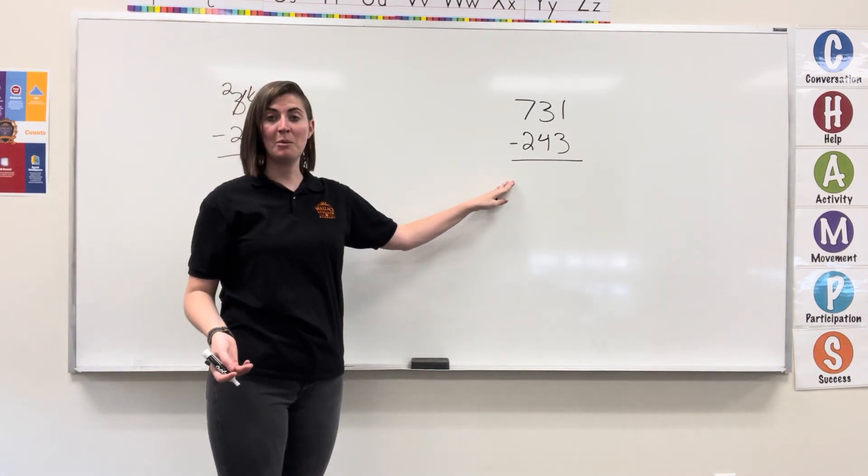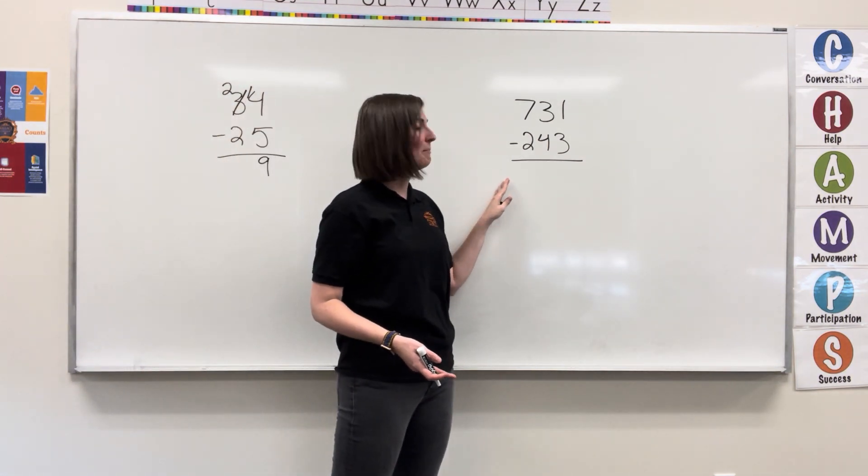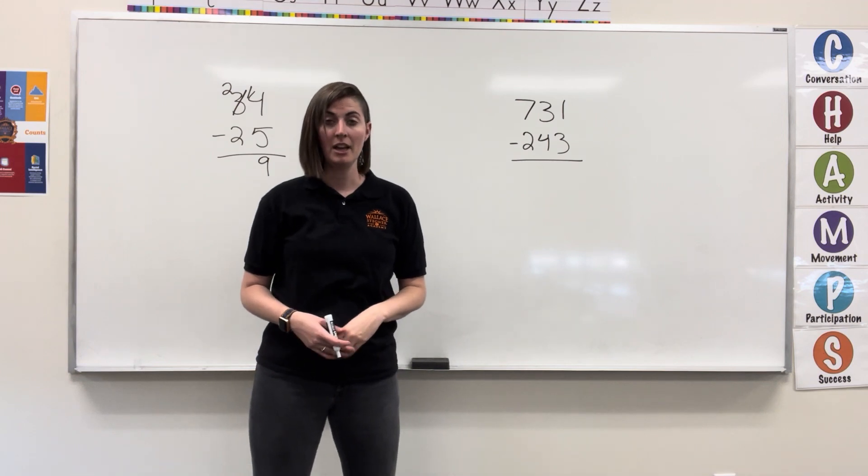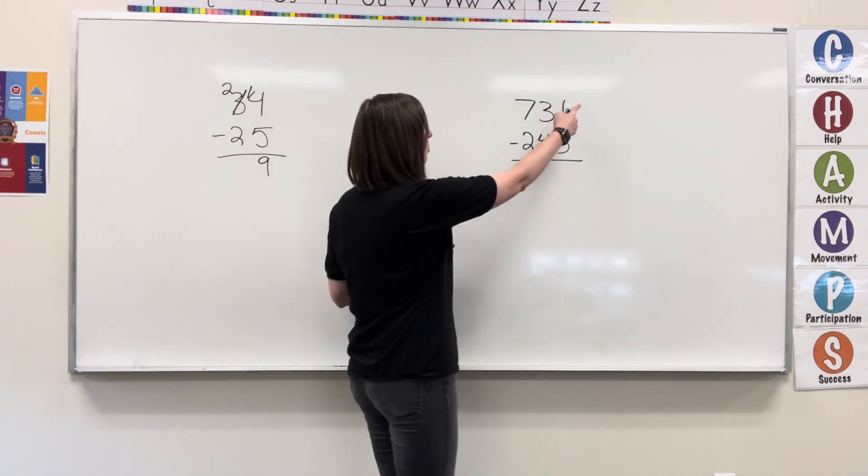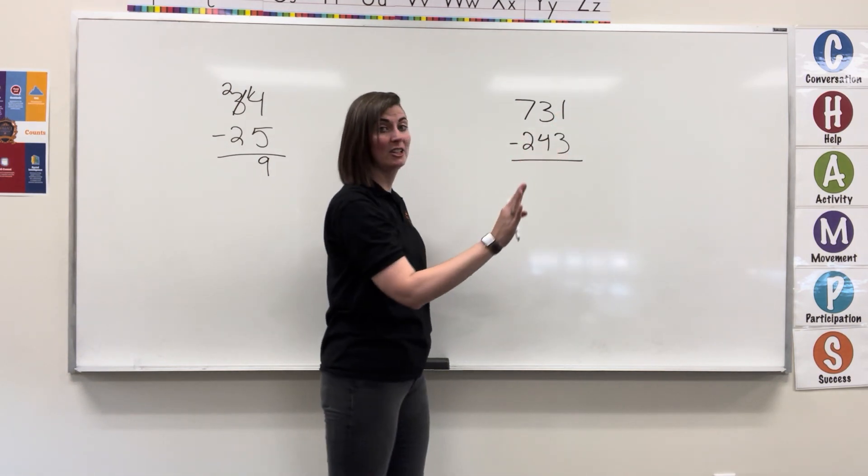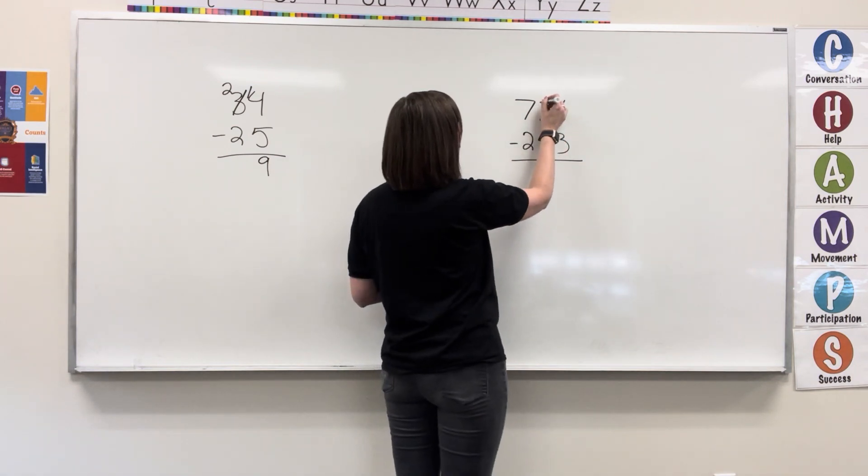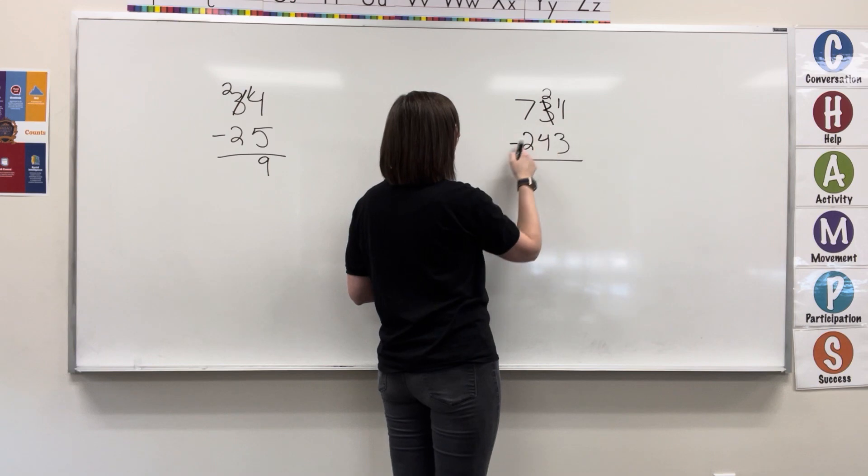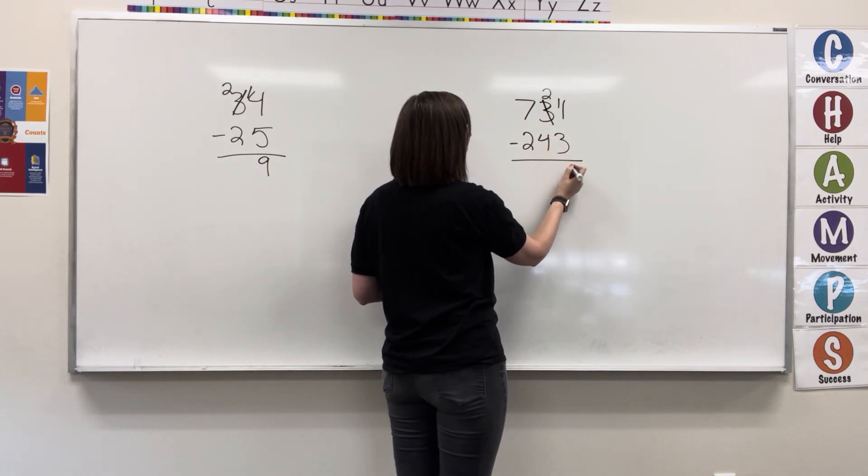Another example using borrowing, we have 731 minus 243. Starting in the ones, 1 minus 3, can't do it, go next door. 3 becomes 2, 1 becomes 11. 11 minus 3 equals 8.